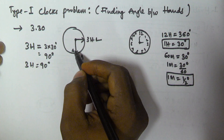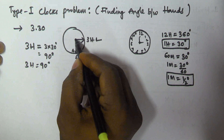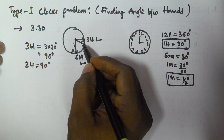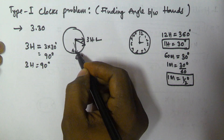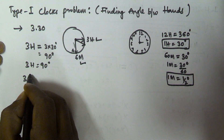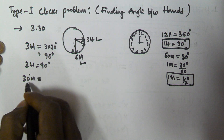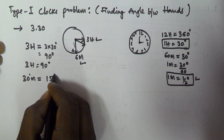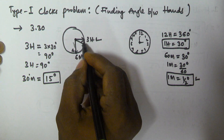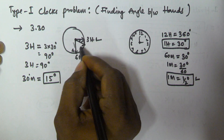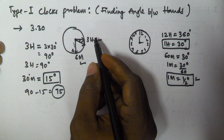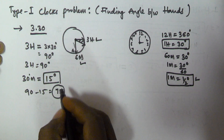But the hours hand is a little bit tilted towards the minutes hand — it is tilted 30 minutes. So we have to find the angle it is tilted. Since 1 minute equals half a degree, 30 minutes equals 15 degrees. So the angle between 3 and 6 is 90 degrees, but the hours hand is tilted 15 degrees, so we subtract: 90 minus 15 equals 75 degrees. The angle between the hours and minutes hands at 3:30 is 75 degrees.